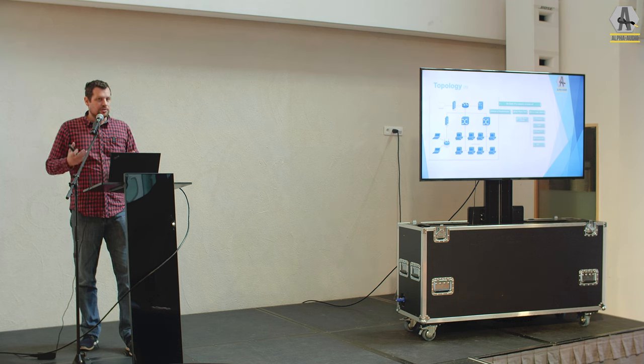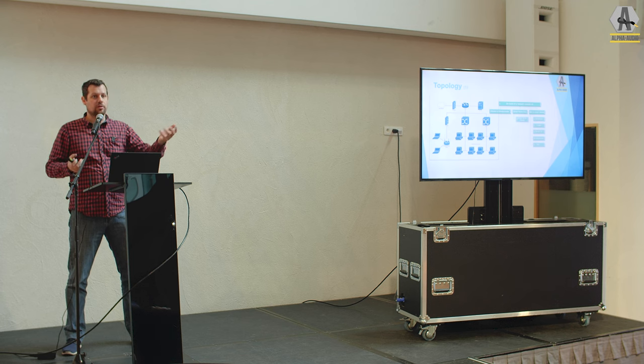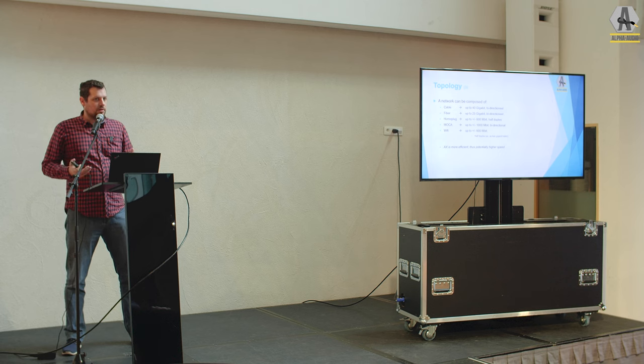A network consists of a minimum of two devices that can exchange data - it can be your router with your phone, your router with your streamer, or a streamer with a NAS device - but it can extend to millions of clients. Every client or device gets an IP address that is unique at a certain point in time in your network. You can walk into your home network with your phone, it gets an IP address, and the next day you get a different one.